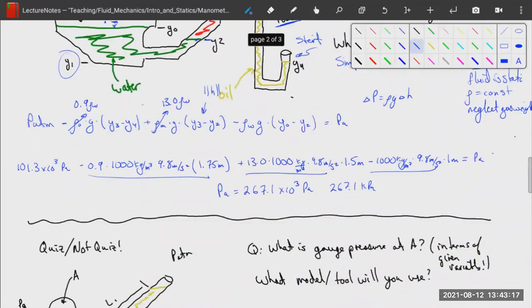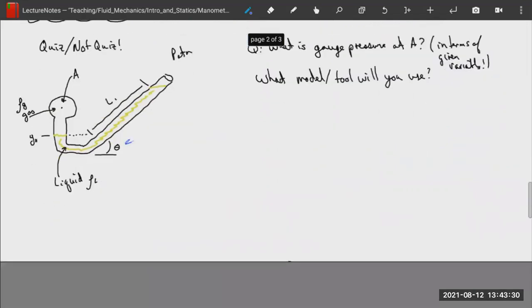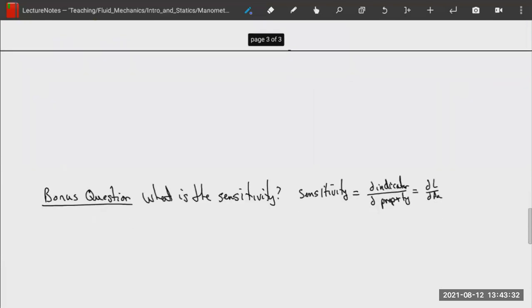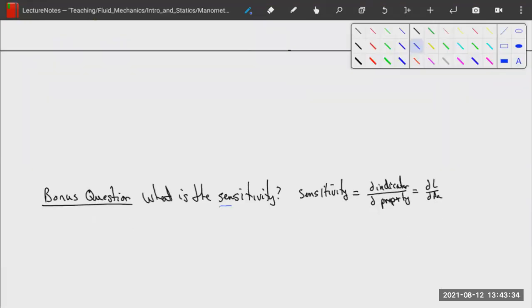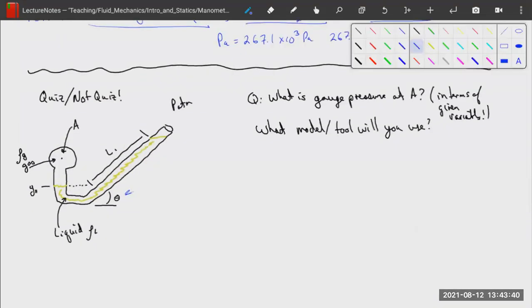So that's it. In class, we will do a quiz, not quiz, about an inclined manometer where we're going to take one arm of it. And instead of having it be straight up and down, we're going to put an angle theta, and we will talk about things like sensitivity and how changing theta affects the sensitivity of this measurement device. Great. Awesome.